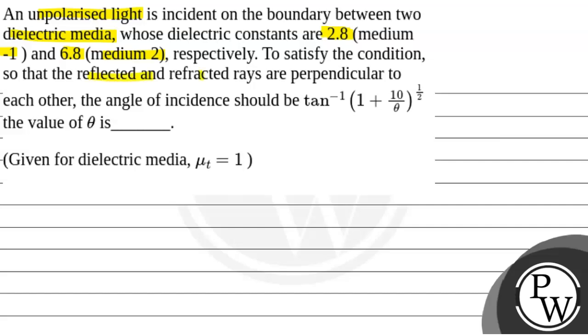so that the reflected and refracted rays are perpendicular to each other, the angle of incidence should be tan inverse of 1 plus 10 by theta to the power half. We will find what is the value of theta.